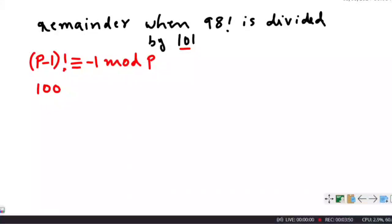So we can write 100 factorial congruent to -1 mod p, where p is 101.